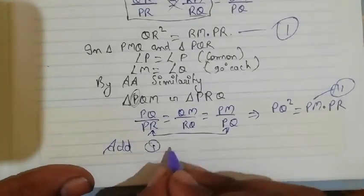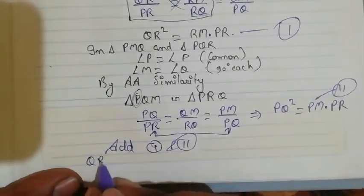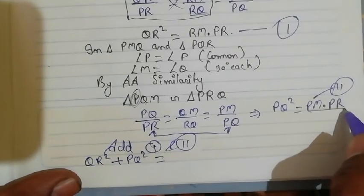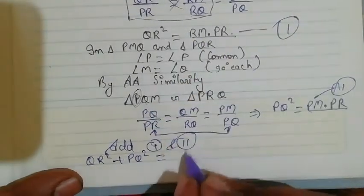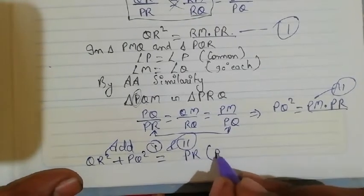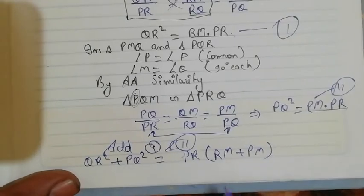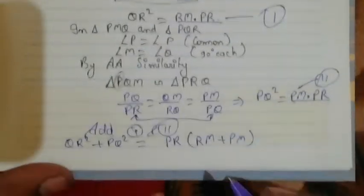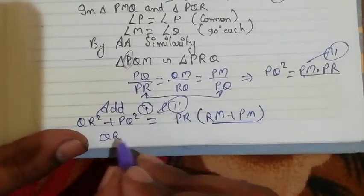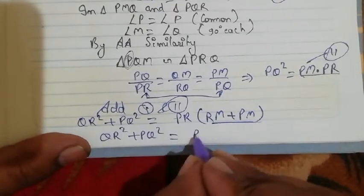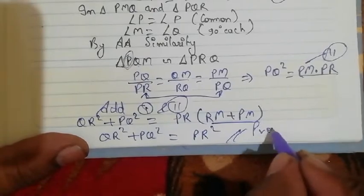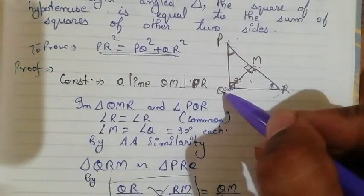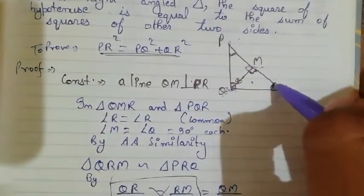Now if we add equations one and two: QR² + PQ² = RM × PR + PM × PR. We can take PR as common, giving us PR × (RM + PM). Since RM + PM = PR, we get QR² + PQ² = PR², which is what we had to prove. We constructed a perpendicular line QM from Q to PR.